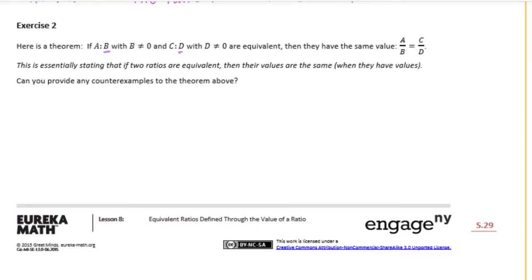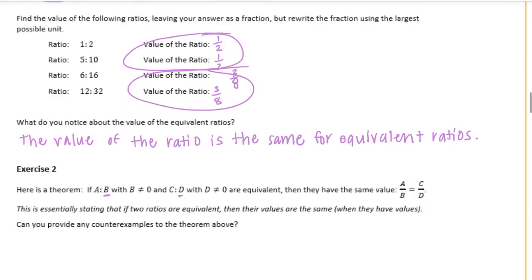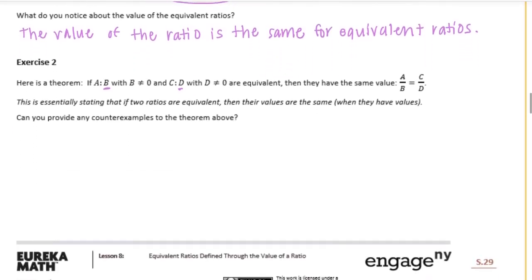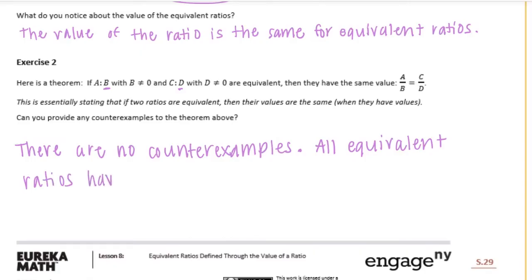So I'm going to tell you that you can't find any counterexamples. This is always going to be true because when you have two equivalent ratios, when you reduce them down and find the value of the ratio like we did above, they should always have the same value. If they don't, they are not equivalent. So let's say there are no counterexamples, and we can also say that all equivalent ratios have the same value.